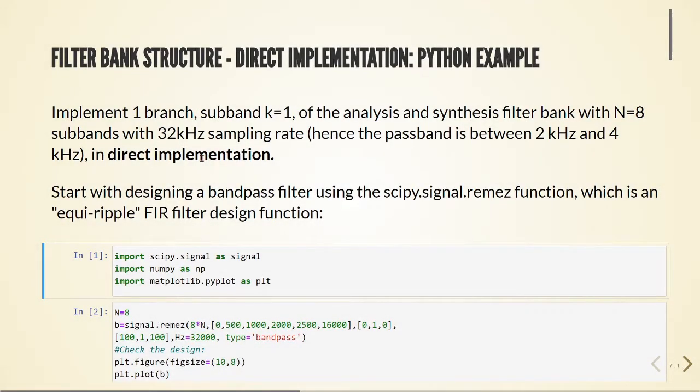Let's take a look at the filter bank structure and direct implementation in practice using a Python example. In this example we will implement one branch for subband K equals 1 of the analysis and synthesis filter bank with N equals 8 subbands and with 32 kHz sampling rate.